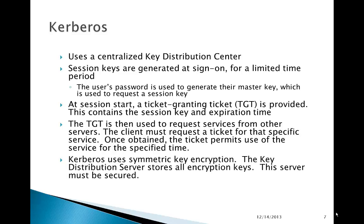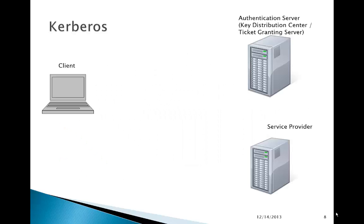Kerberos uses symmetric key encryption — the encrypting key equals the decrypting key. The key distribution server stores all the encryption keys and this server must be secured. This is why domain controllers in Microsoft Windows Active Directory must be physically secured. Here's how Kerberos works: first, the client makes an authentication request to the authentication server, which is often the key distribution center and ticket-granting server combined.